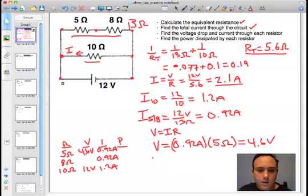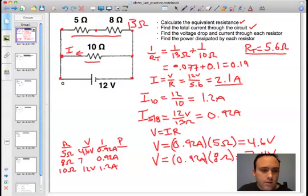And the next one we have to solve for is the voltage across the 8 ohm resistor. Again, the current is the same 0.92 amps, and the resistance is 8 ohms. So that gives us a voltage of 7.4 volts.